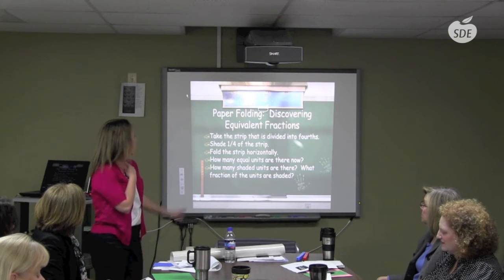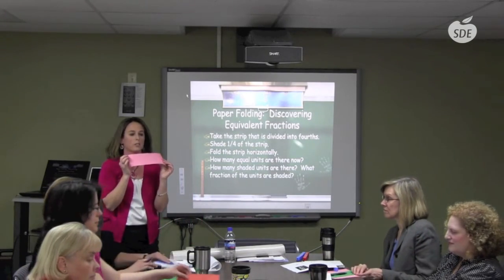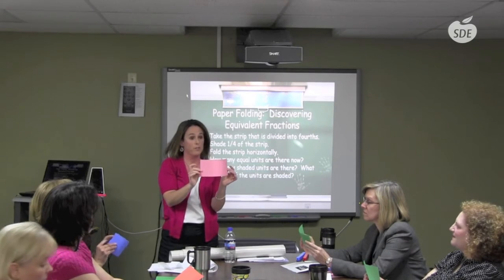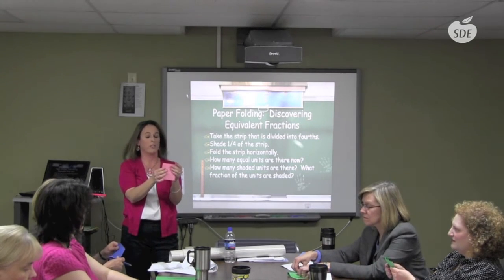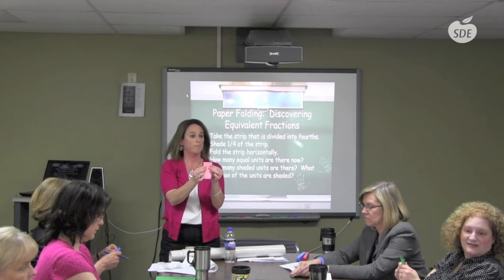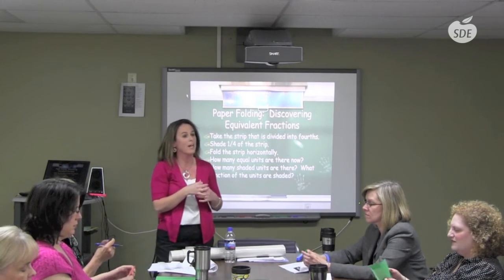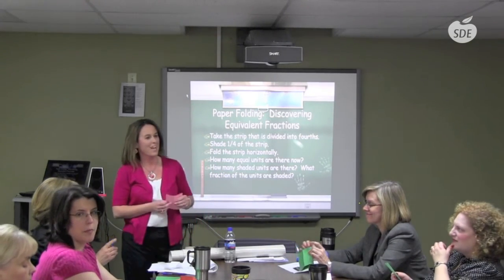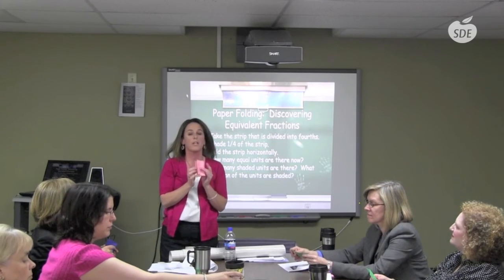For equivalent fractions, you have two congruent squares and a larger rectangle. With the rectangle, we're going to fold it into fourths — vertically. If you don't specify direction, some students will fold it the other way. We spend a lot of time working on horizontal and vertical. The reason I want it vertical is so they can see the one fourth this particular way first — you'll see why.